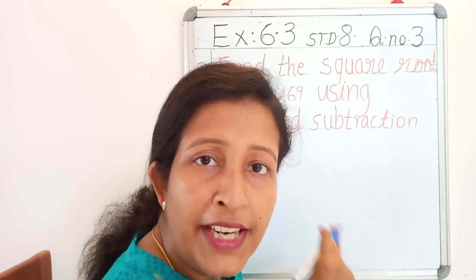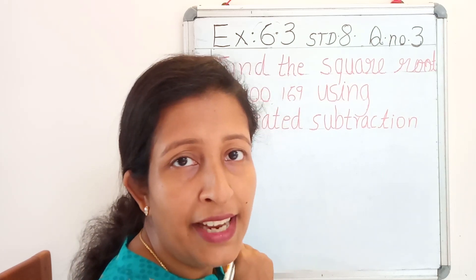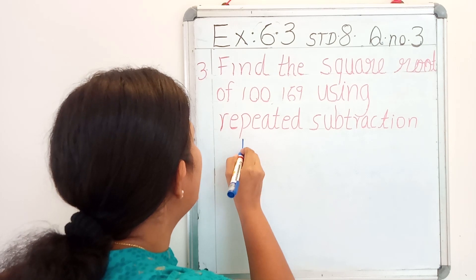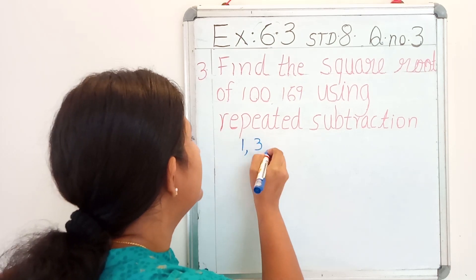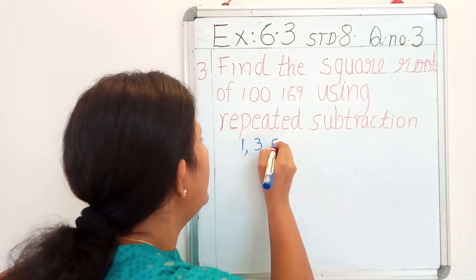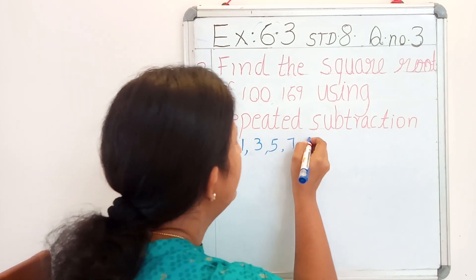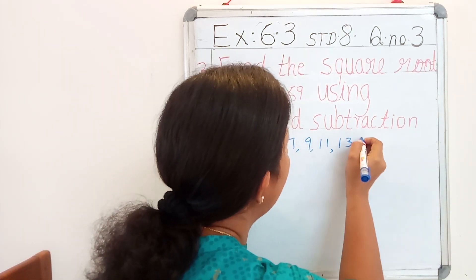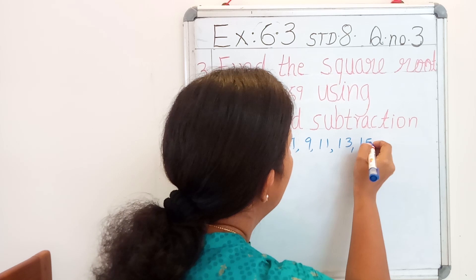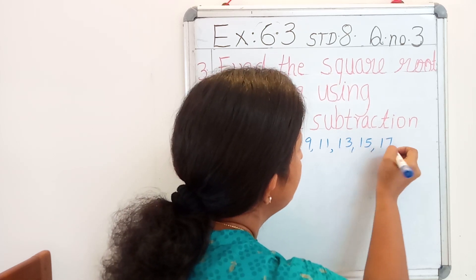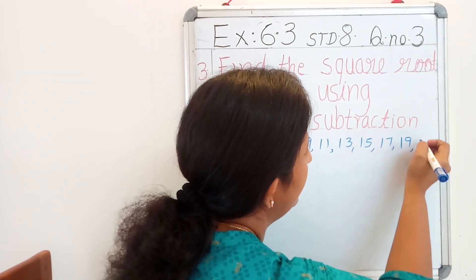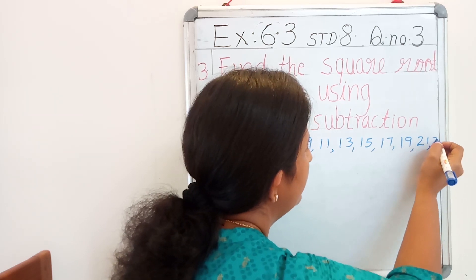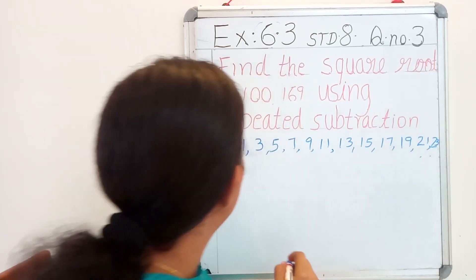Now for finding the square root of 169, again I am going to write down the natural odd numbers starting from 1: 1, 3, 5, 7, 9, 11, 13, 15, 17, 19, 21, 23, etc.